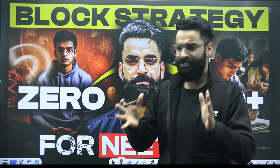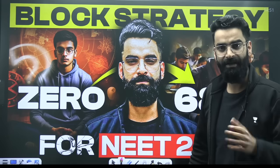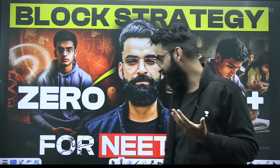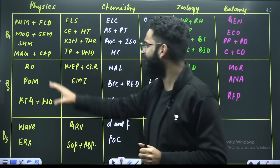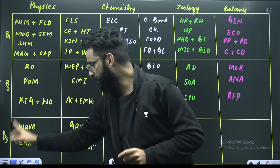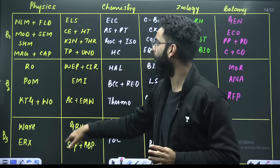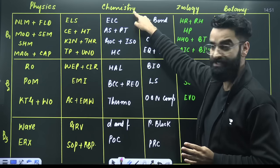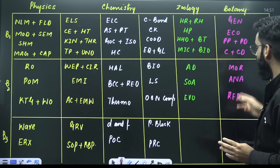So my dear students, as you saw the title here, it is a block strategy — how you are going to carry forward your revision. Over here I have made three blocks: block one, block two, block three. The first two columns are for physics, the second two are for chemistry, one for zoology, one for botany, as per your latest syllabus.